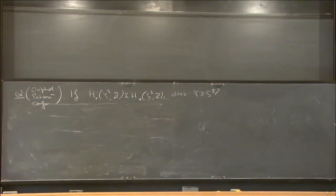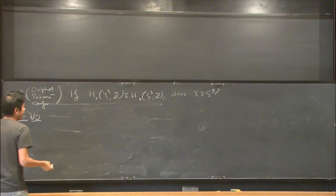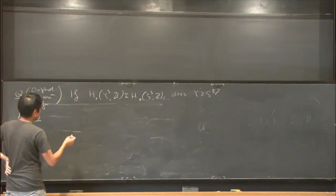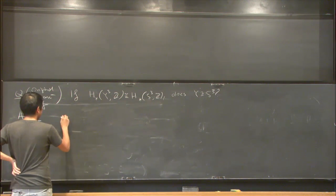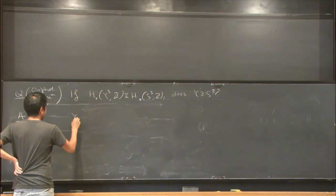Well, he came up with a counterexample shortly after, so the answer is no. There's this space called the Poincaré homology sphere. The way we're going to think of it is you can pick Y which is the boundary of the plumbing of the E8 graph.